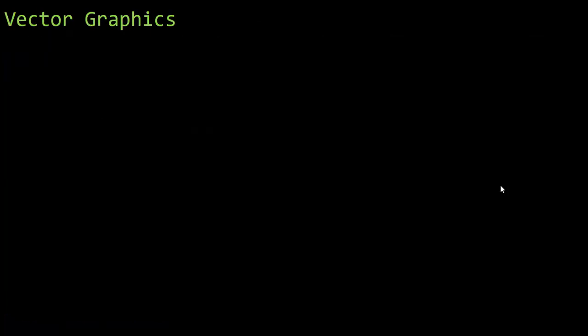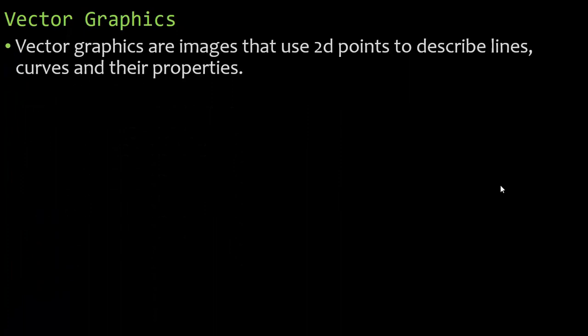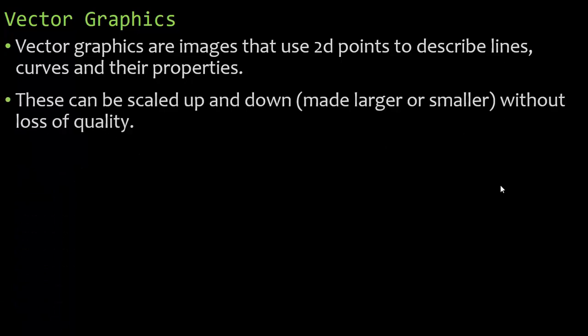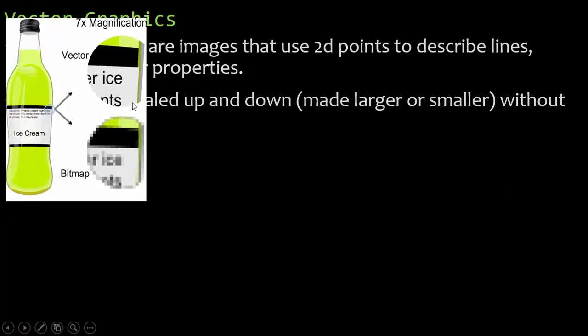Now let's talk about vector graphics. Vector graphics are images that use 2D points to describe lines, curves, and their properties. These can be scaled up and down — we can make them larger or smaller without losing quality. Here we have an image of some type of ice cream soda. In a bitmap image, if we stretch this out we can see we've lost quality and sharpness. But in a vector image, it has a formula that redraws everything and we don't lose any sharpness at all.